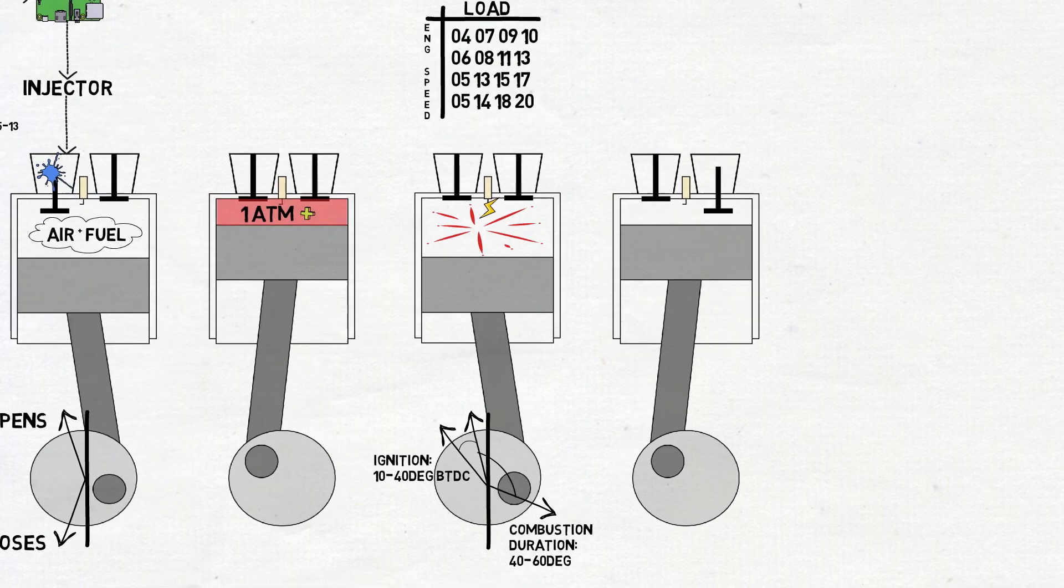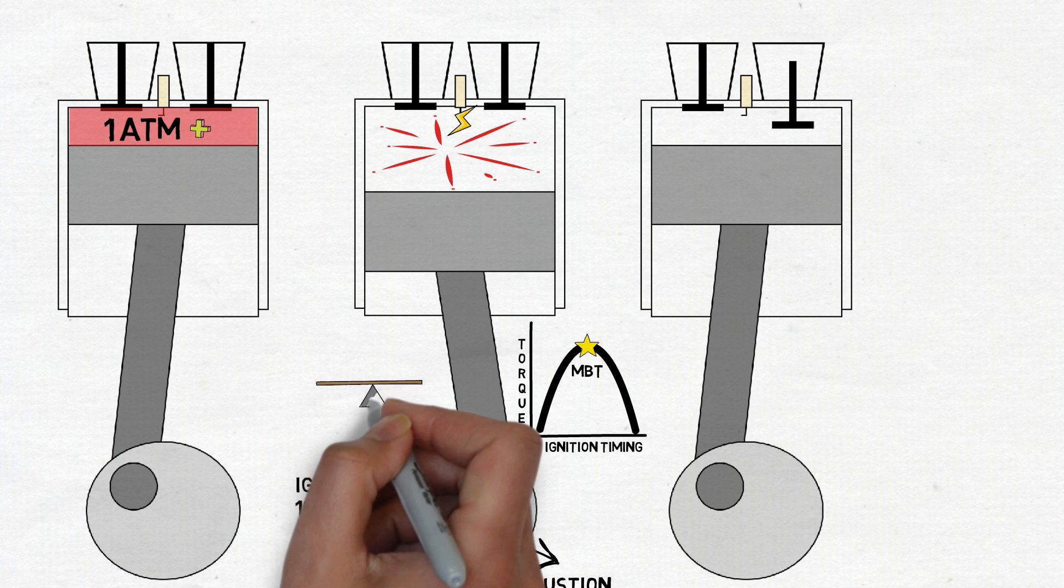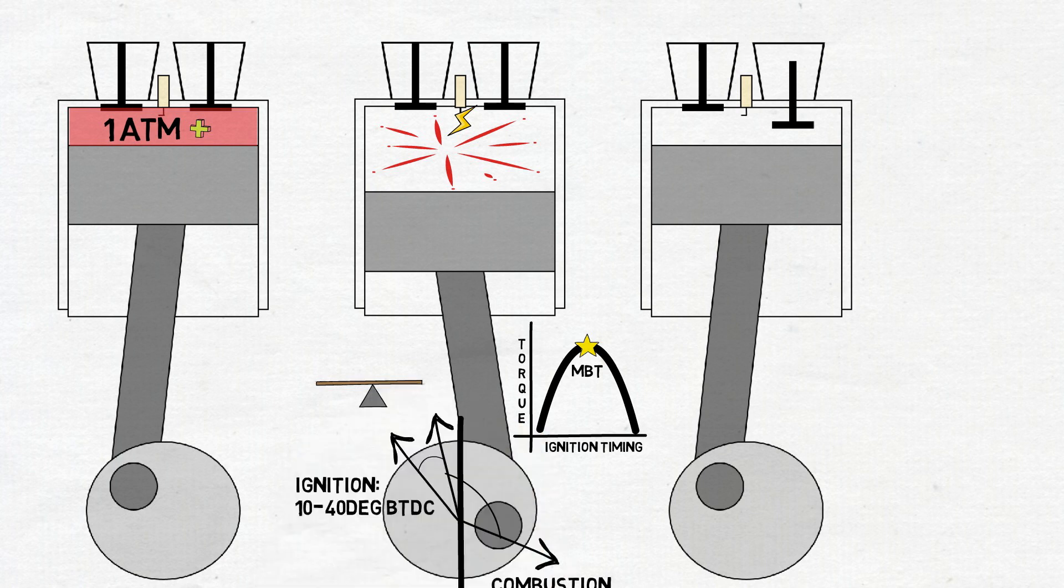The optimal moment to ignite the mixture is known as MBT. It stands for maximum brake torque timing, or minimum timing for best torque. This timing is a compromise between starting combustion too soon, transferring work to the gases during the compression stroke, and completing combustion too late in the power stroke, lowering peak expansion pressure.